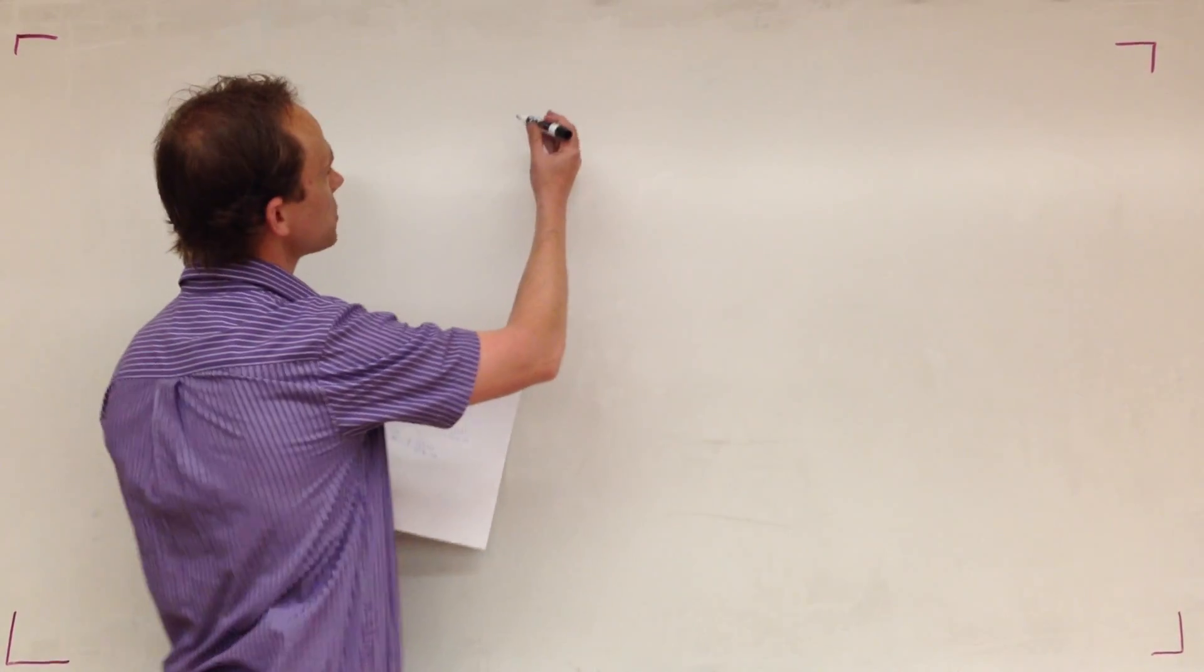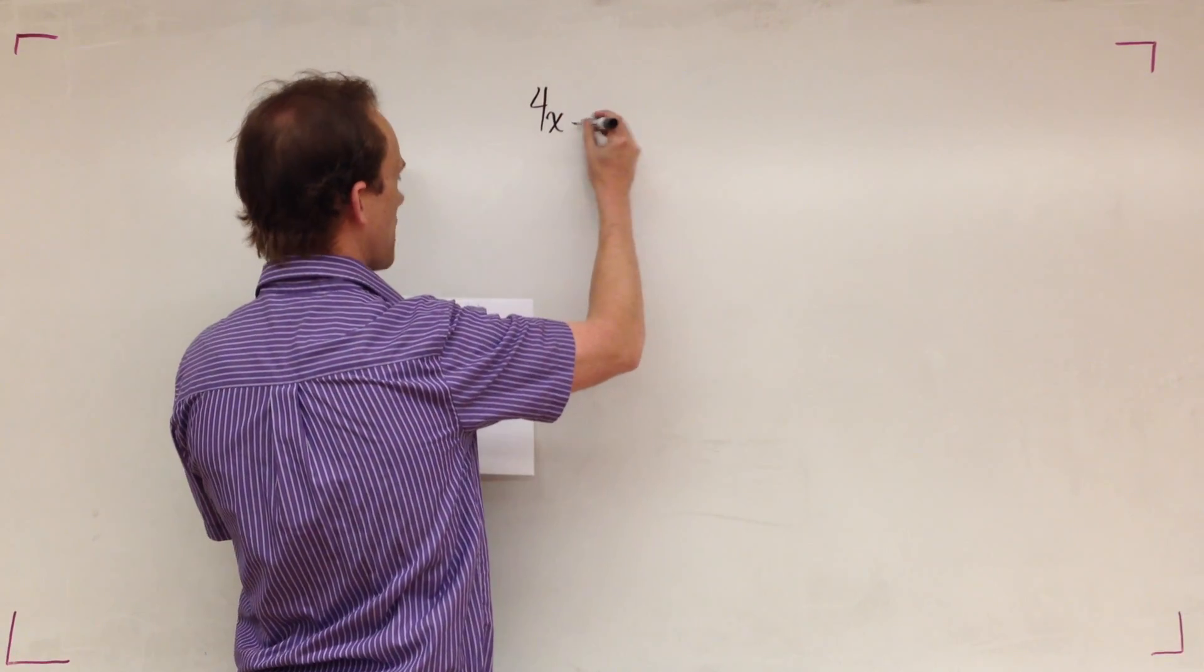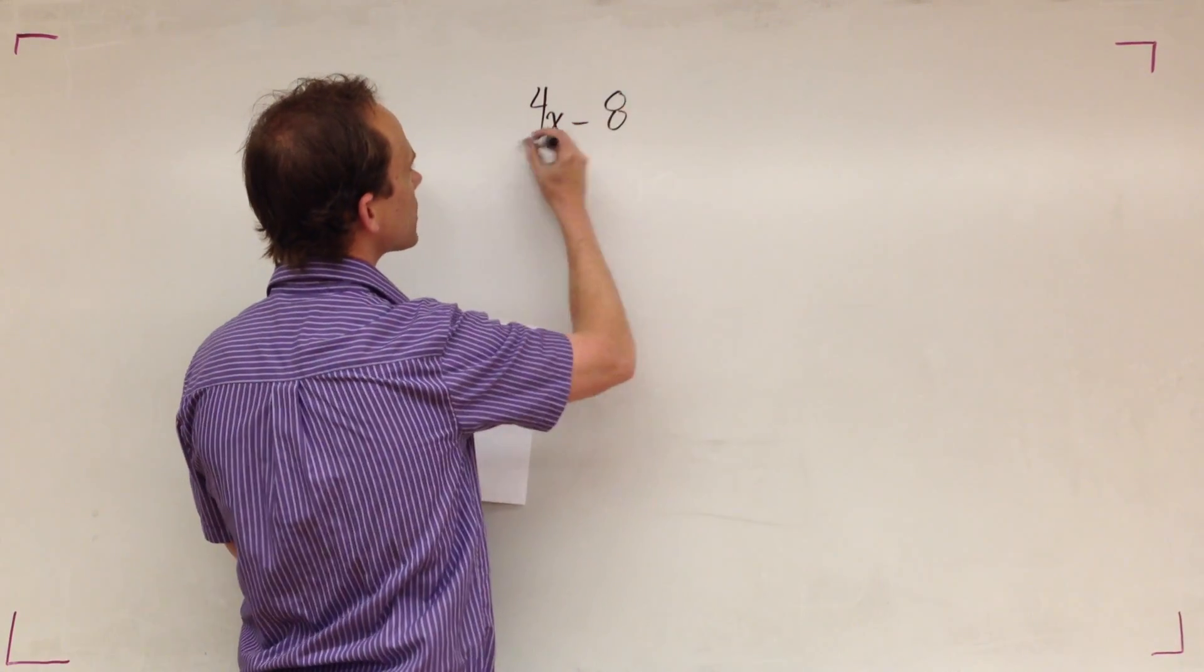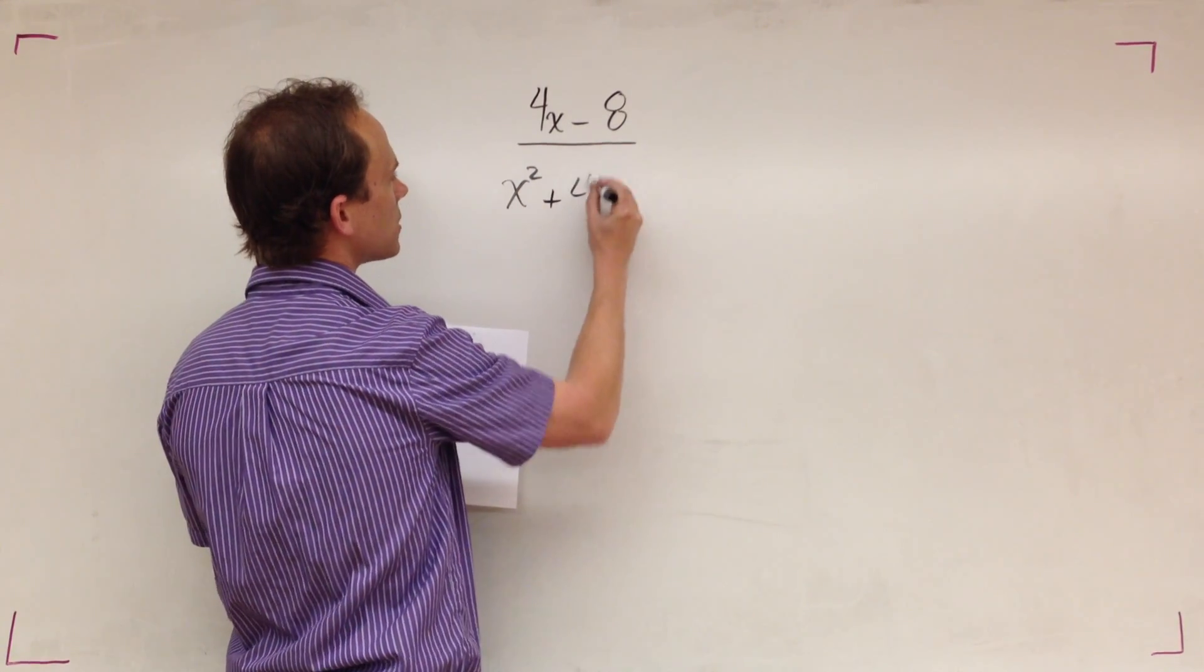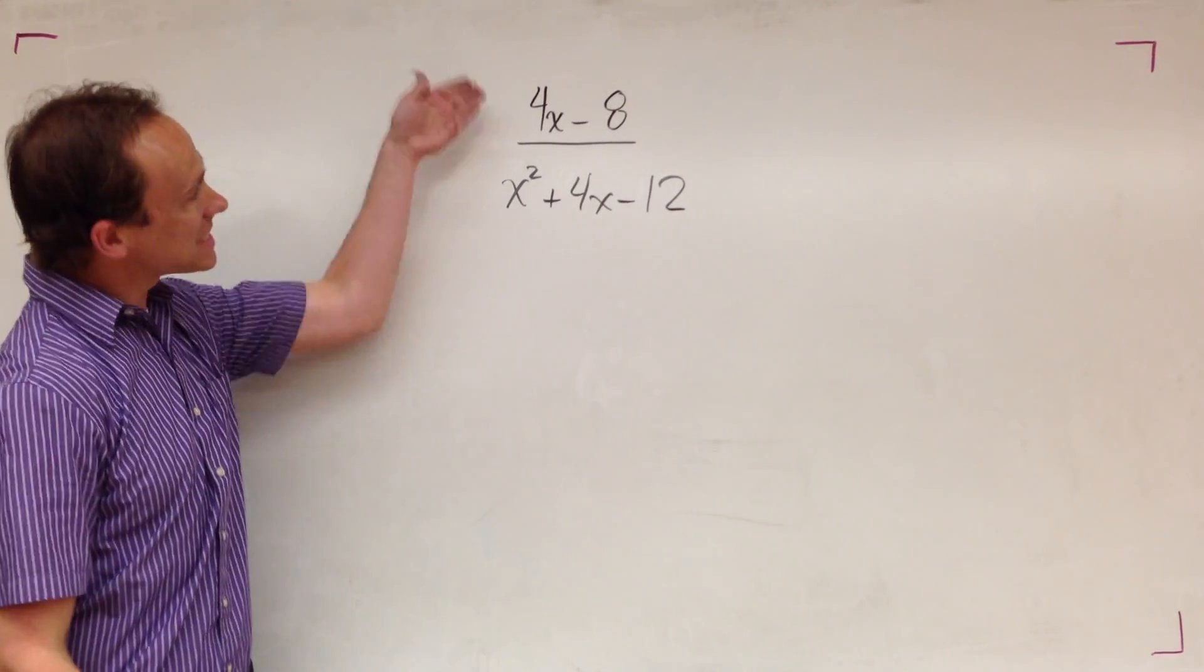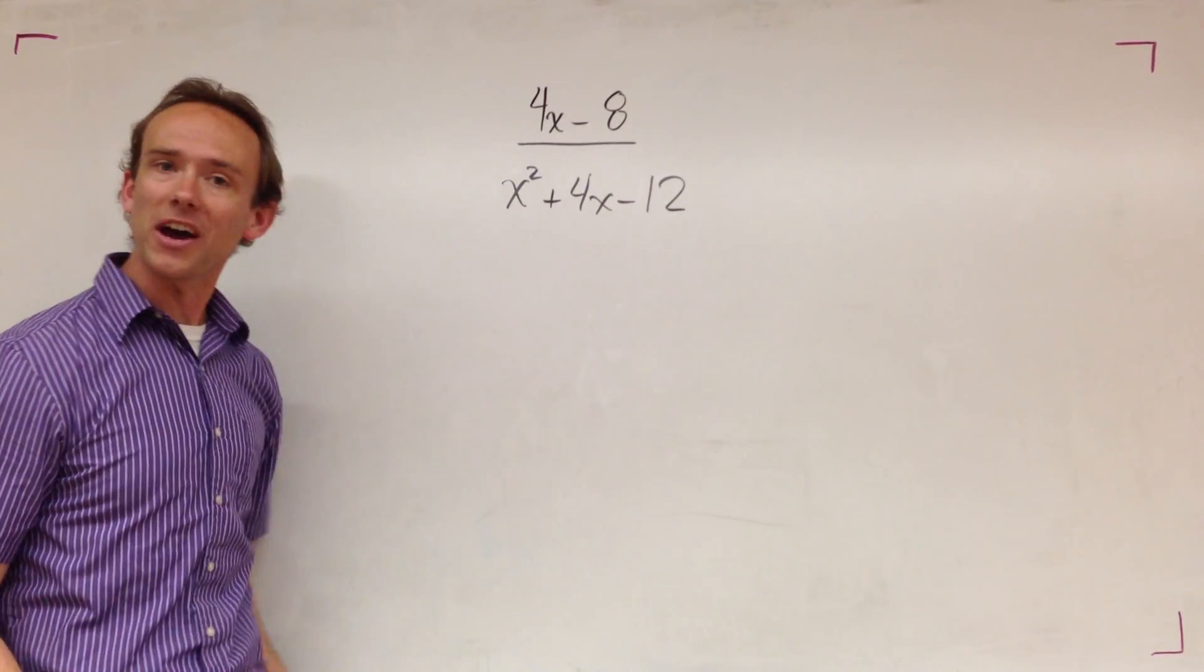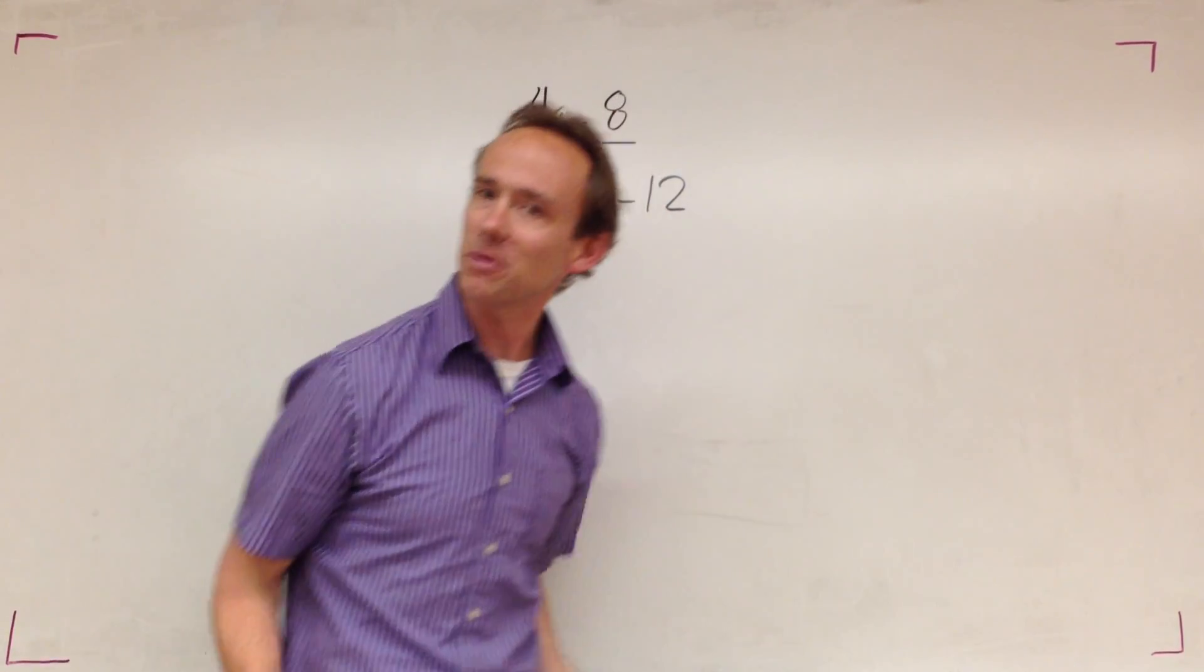Here we go, I'm going to do three problems in this video. Here's the first one: we got 4x minus 8 over x squared plus 4x minus 12. This is a rational expression because this is a fraction, those are variables.